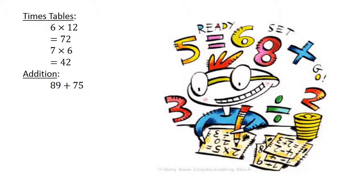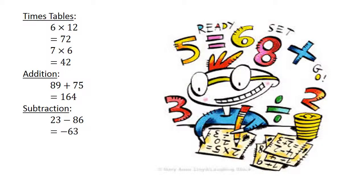Addition: 89 plus 75 equals 164. Subtraction: 23 minus 86 equals negative 67.